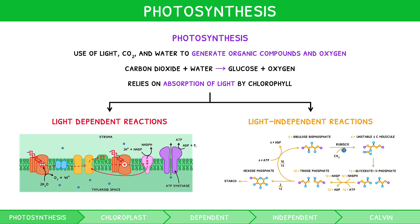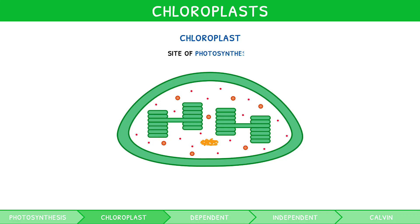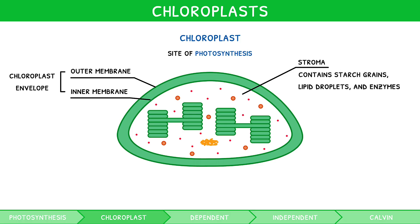Like with respiration, to contextualise these reactions, it is useful to first understand the structure of the organelle that carries them out — the chloroplast. Chloroplasts are the site of photosynthesis. Like mitochondria, they have a unique structure which you must draw and annotate. They have a double membrane known as the chloroplast envelope, and they contain a stroma — like a cytoplasm — which contains starch grains, lipid droplets, and enzymes, all required for the light-independent reactions.